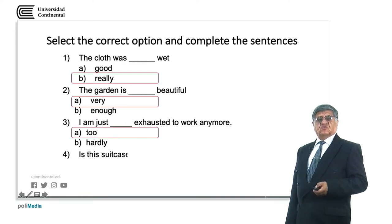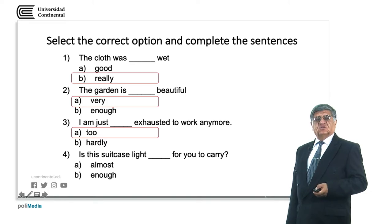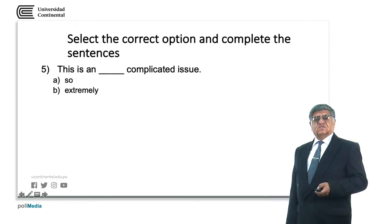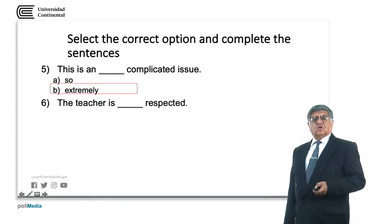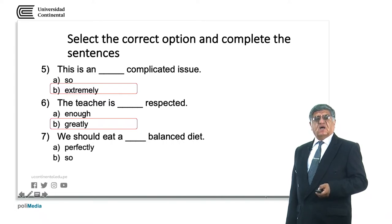Too is the answer because hardly exhausted is not correct. Is this suitcase light? Enough is the answer because almost does not make sense in this case. The article an gives us the answer — an extremely complicated issue, because and so does not work. The teacher is enough respected is incorrect; greatly respected is correct. We should eat a perfectly balanced diet makes sense, so the answer is A.